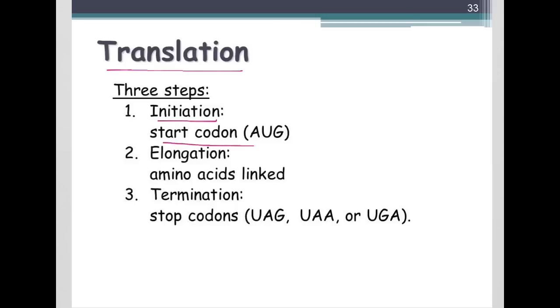Initiation, where we start at our start codon, which is always AUG. You do need to know that. Elongation, where basically we just continue to add amino acids and go down and read the mRNA transcript. And at the end, termination, where we get to one of our three stop codons.